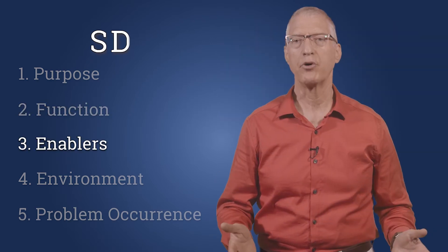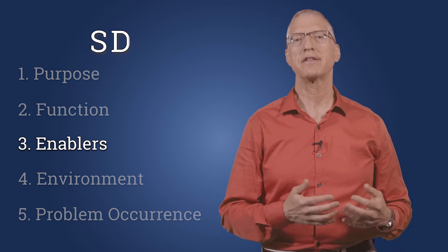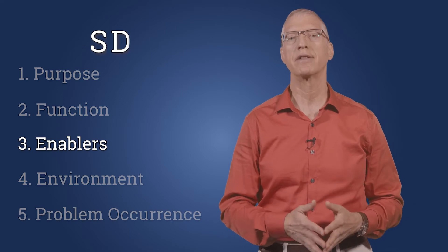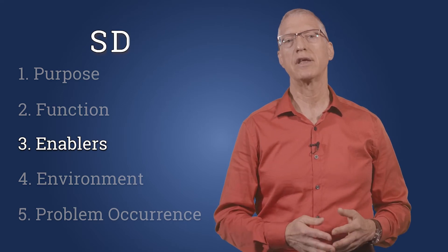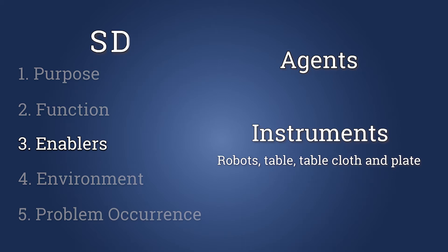The third component, enablers, includes the objects that enable the system's main process, allowing the system to operate. There are two kinds of enablers: agents and instruments. Here, the instruments are the robots, the table, the tablecloth, and the plate. Agents are always people. In our system, they operate the robots.